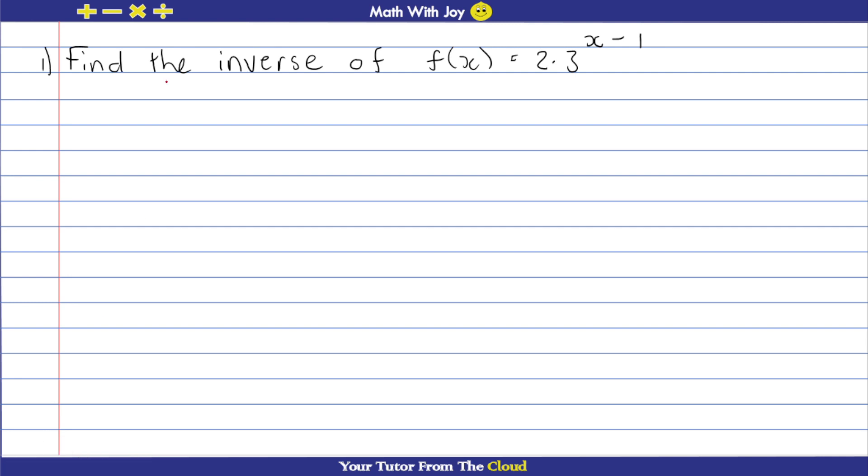So let's start by writing the function itself. We have f(x) equals 2 times 3 to the power of x minus 1.